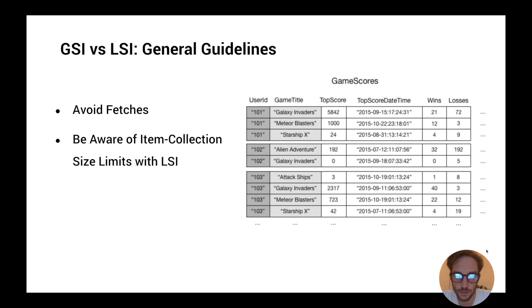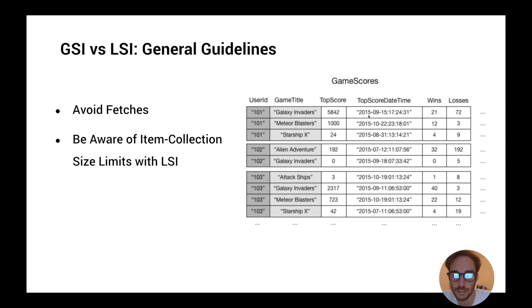These two best practices also apply to local indexes. The first one is to avoid fetches. A fetch is when DynamoDB has to retrieve the entire item — this happens when you query a local secondary index and request attributes that are not projected into the index. For example, if you have a local secondary index on user ID as partition key and top score as sort key, but your query also asks for top score date-time, this is possible with a local index, but it will consume more read capacity because DynamoDB has to fetch the whole item for you.